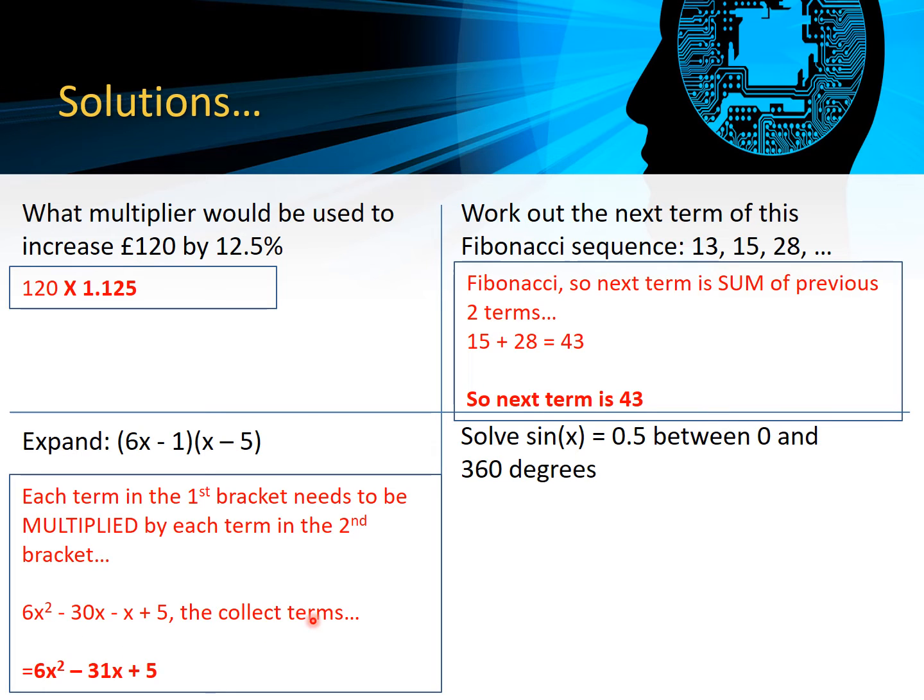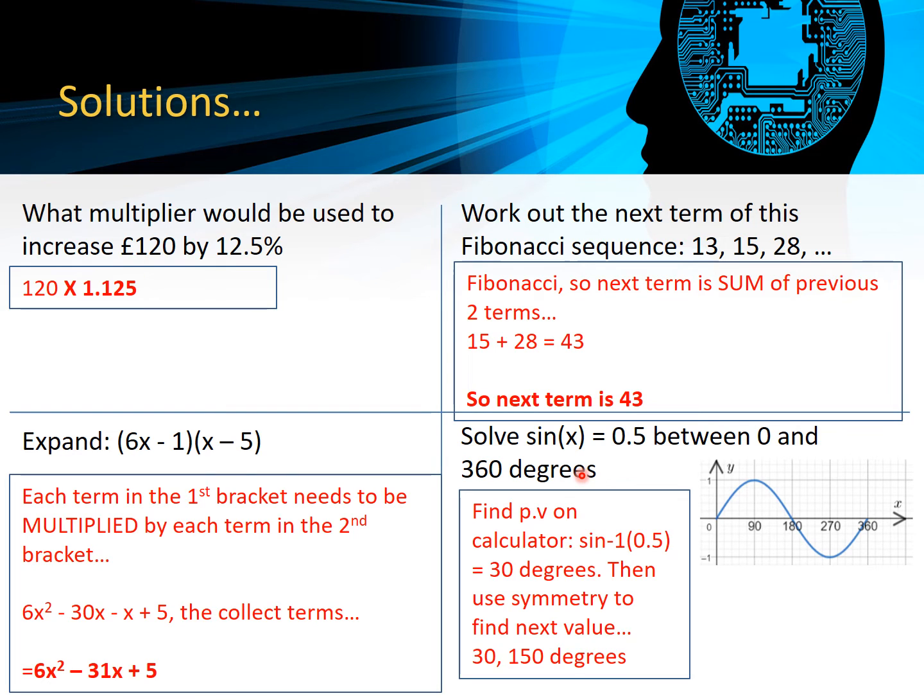Finally, solve sin(x) = 0.5 between 0 and 360 degrees. We can use our calculator to do this. When we do that, we're going to use sin⁻¹(0.5). It'll tell you 30 degrees. That 30 degrees value is going to be somewhere about here on the graph.